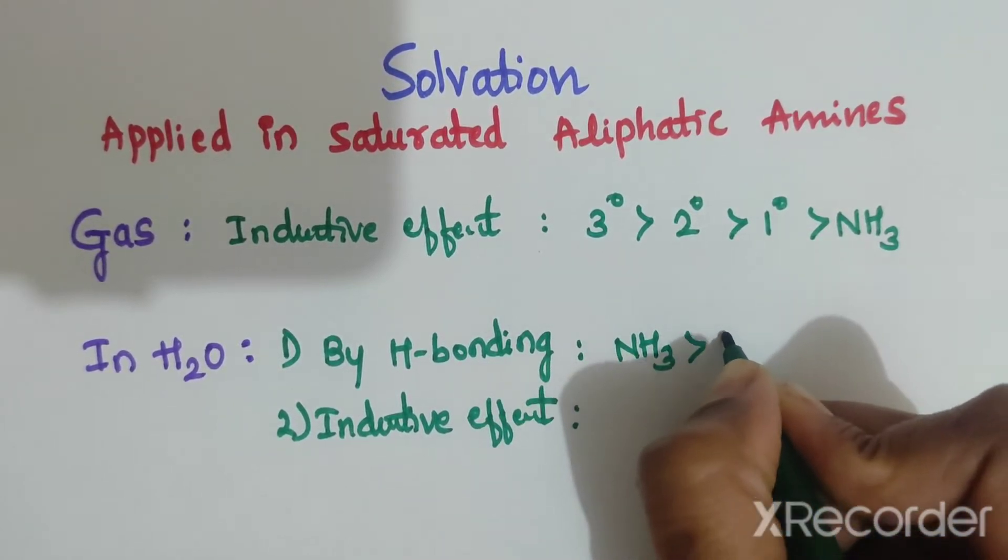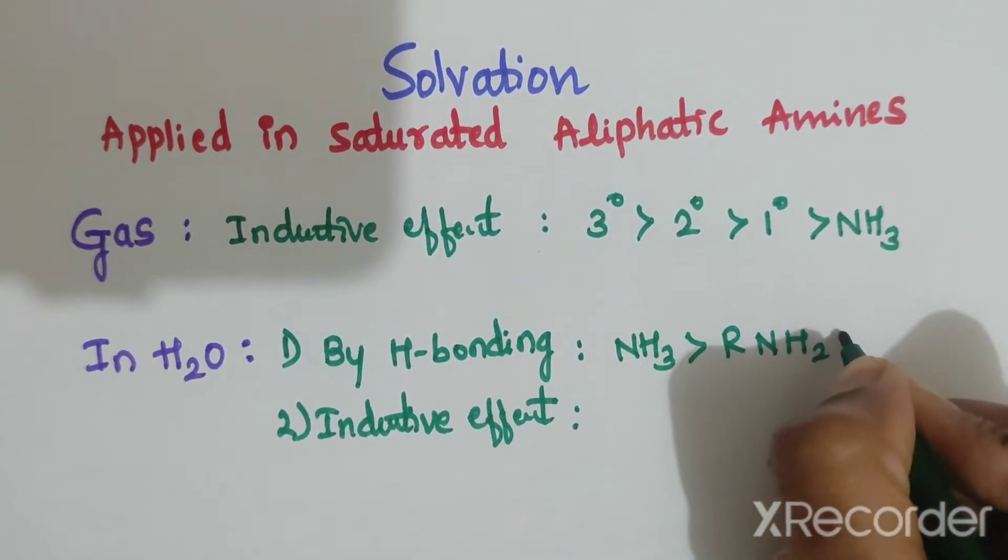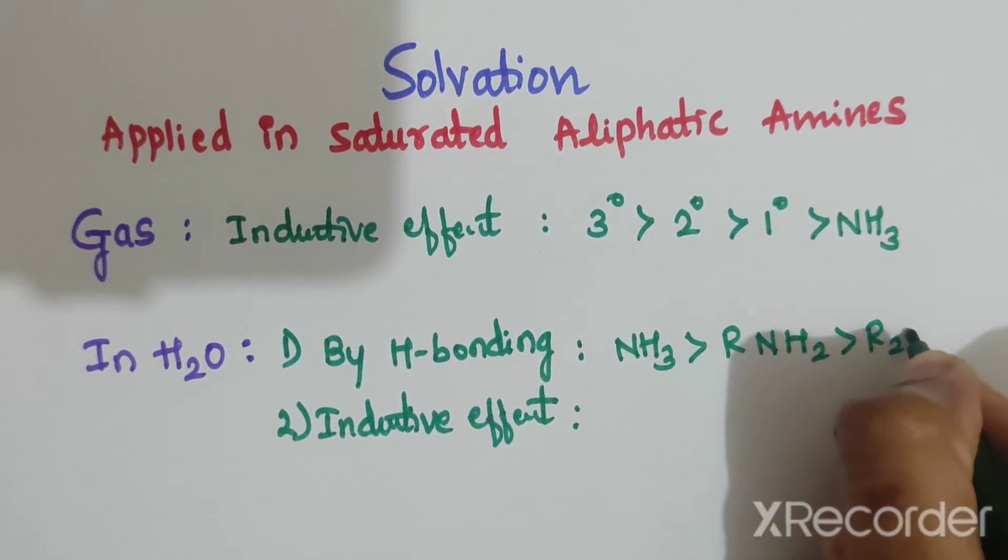Ammonia is more basic than RNH2, R2NH, and R3N.